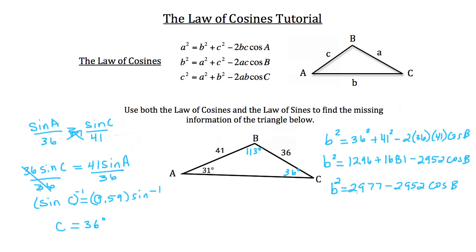Let's plug in what we know for angle B: it has a measurement of 113 degrees. Now we can solve for everything on the right-hand side. We have b squared is equal to 4130.4. We want to solve for b, so we're going to take the square root of both sides. The square root and the square cancel on the left, and we have b is equal to roughly 64.3.